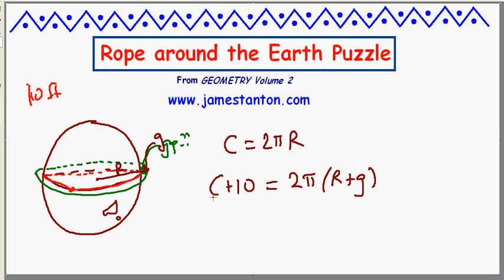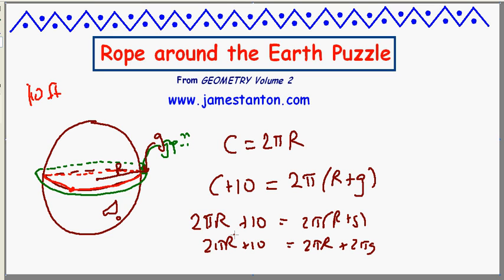Well, let's see. I don't know what the circumference is, but I have a formula for it. It's 2πr. 2πr plus 10 feet is 2πr plus the gap. 2πr plus 10 is 2πr plus 2πg. And without even knowing the radius of the Earth, it cancels away. I'm left with the gap. 10 is 2πg. The gap is 5 over π. And if you remember, that's about 1.6 feet.